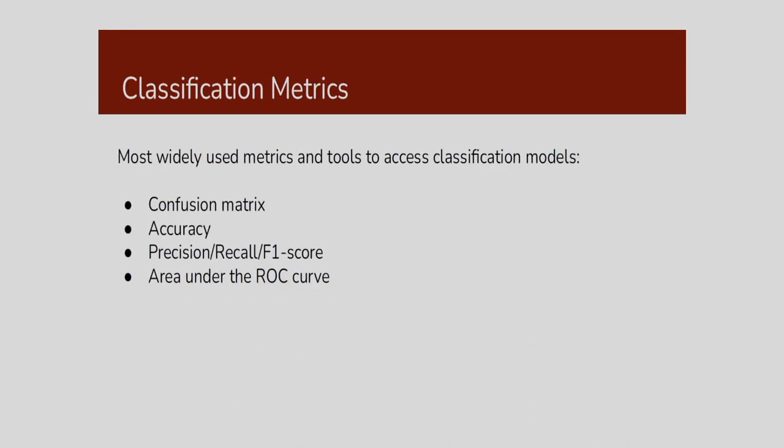For classification metrics, I will be discussing the concept of the confusion matrix, accuracy, precision, recall, F1 score, and area under the ROC curve. These are the metrics with the help of which I can determine the performance of a classifier. All these metrics I am going to discuss, and mainly the important point is the confusion matrix. From the confusion matrix, I can determine the rest of the parameters.